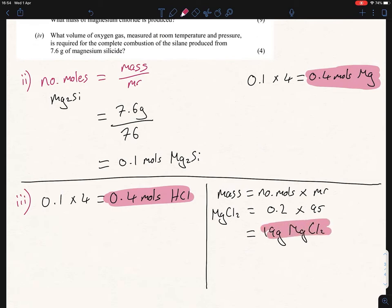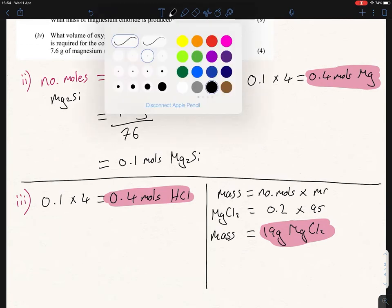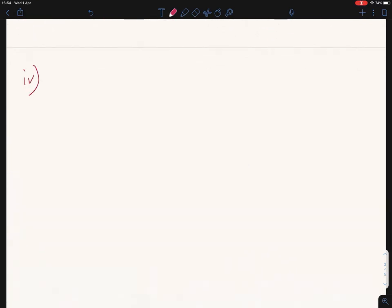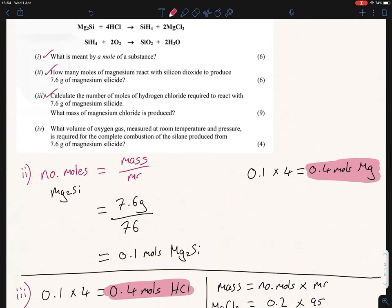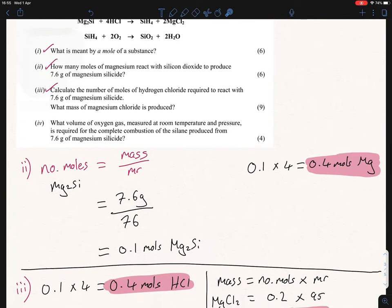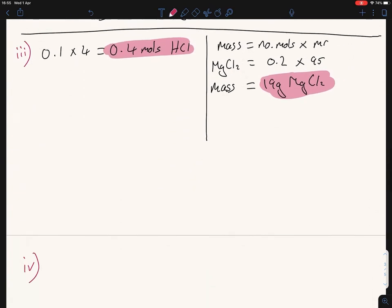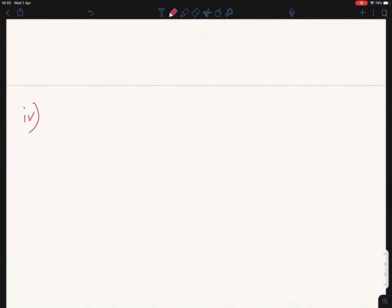The final part, part iv, is asking us: what volume of oxygen gas measured at room temperature and pressure is required for the complete combustion of silane produced from 7.6 grams of magnesium silicide? We can get rid of the majority of that sentence. All we're asked here is to figure out the volume of oxygen gas measured at room temperature and pressure. As soon as that appears, there's only one formula you can use, and that has to be volume equals number of moles times 24.